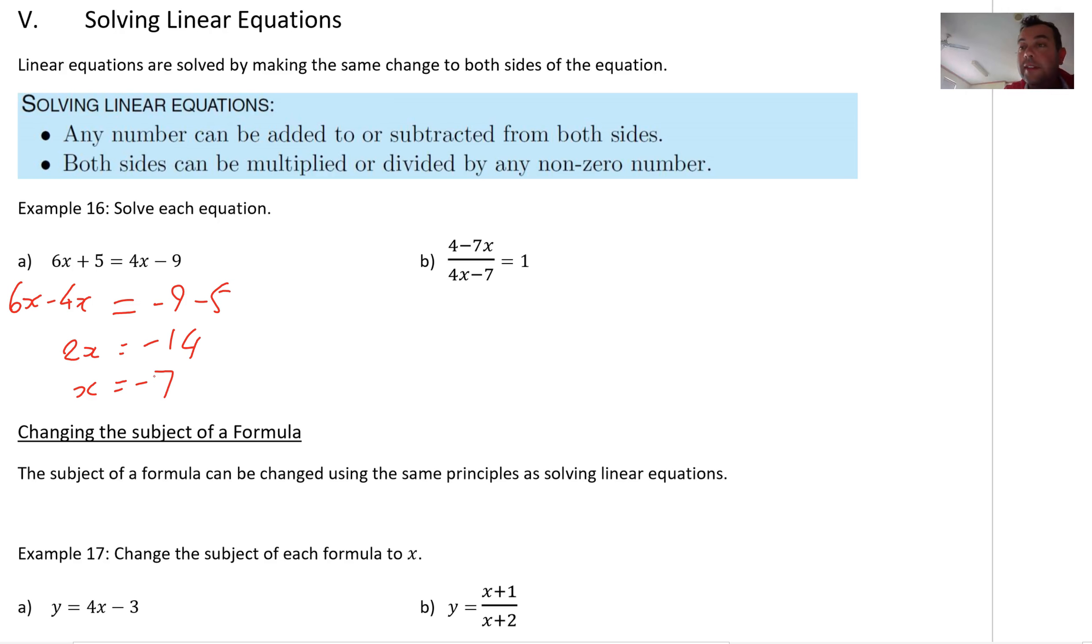Great thing about these is they are easy to check. Sometimes they're hard to solve. They're really easy to check. Chuck negative 7 back into here. What do we get? Negative 42 plus 5, negative 37. Or, we have negative 28 minus another 9, negative 37. There we go, left hand side equals right hand side. We can check those.